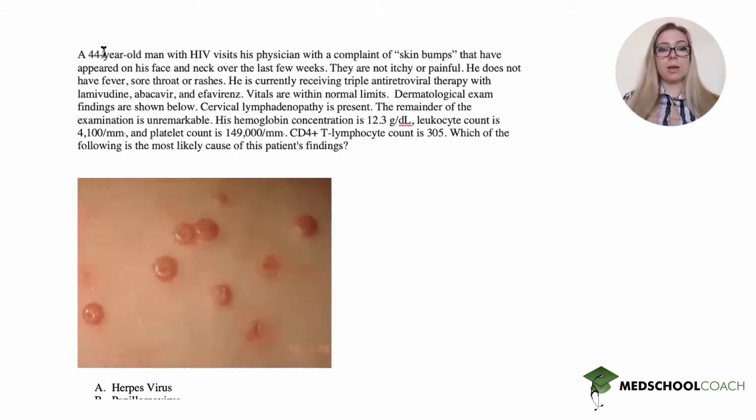Vitals are normal. Derm exam shows the findings below. Cervical lymphadenopathy is present. The remainder of the exam is unremarkable. His hemoglobin is 12.3, leukocytes are 4.1, and platelets are 149,000.